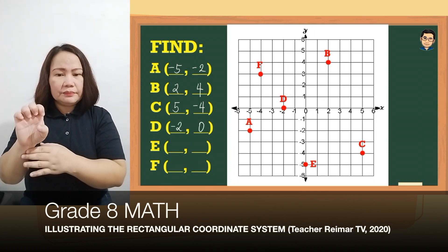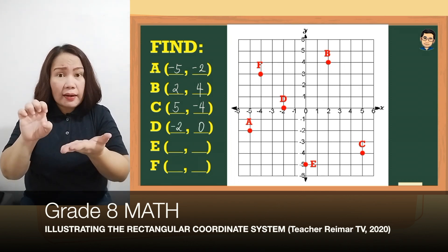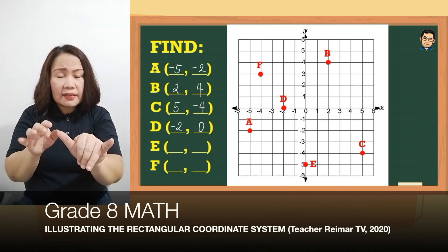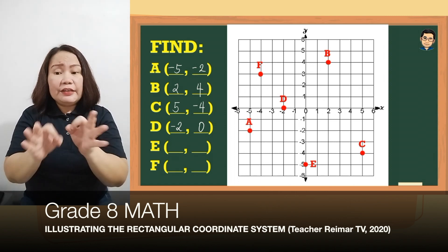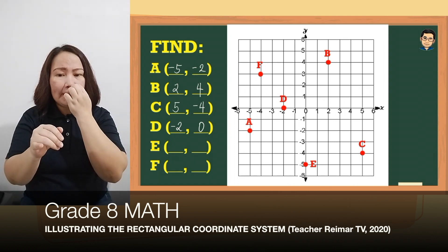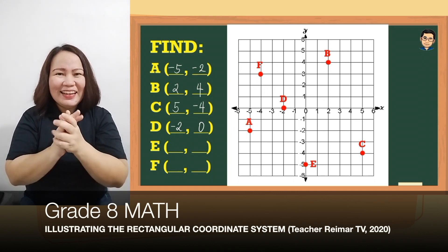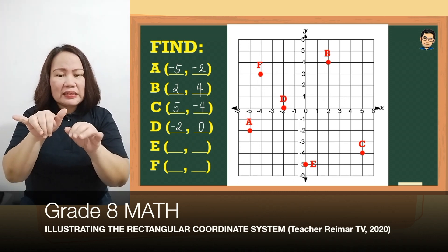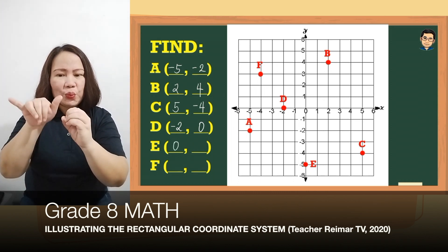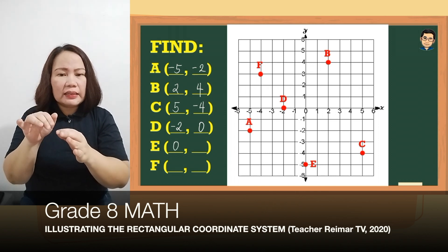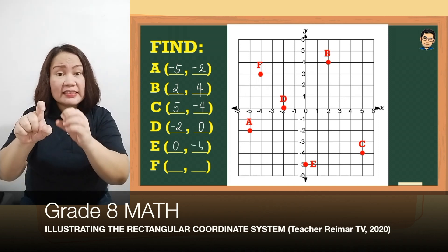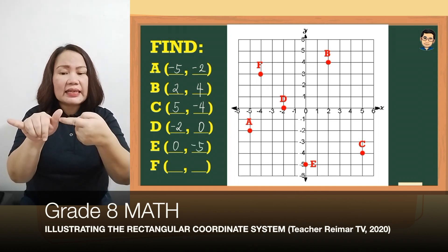Yung E naman ay nasa y-axis. So baligtad — kung kanina nasa huli yung 0, dito naman mauna yung 0. So 0 and then naka-place siya sa negative 5. So yung coordinates po ng E ay (0, -5).